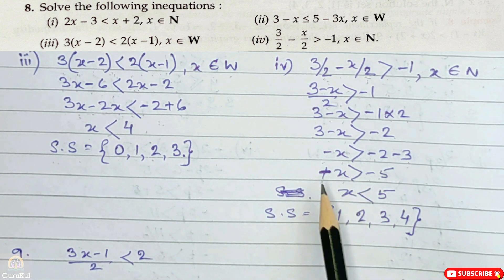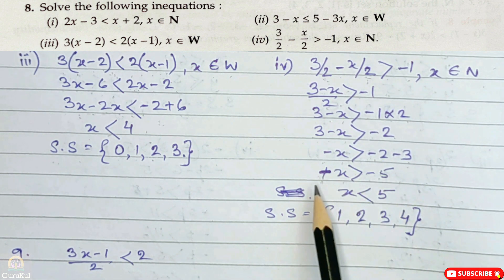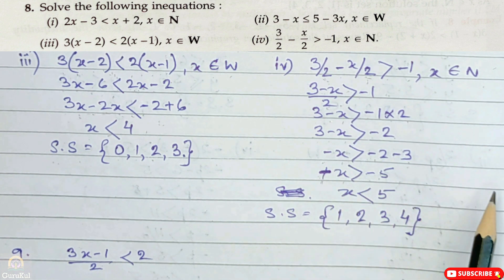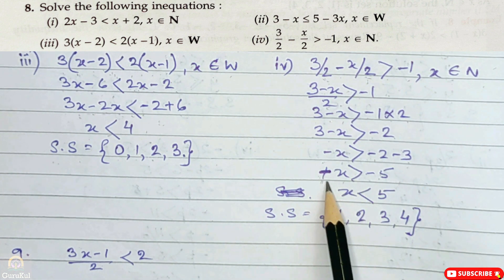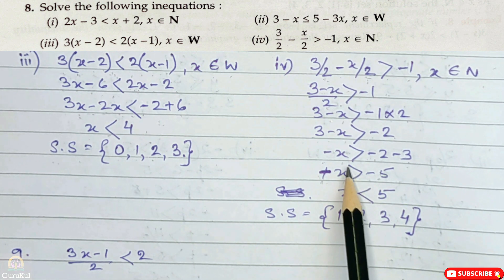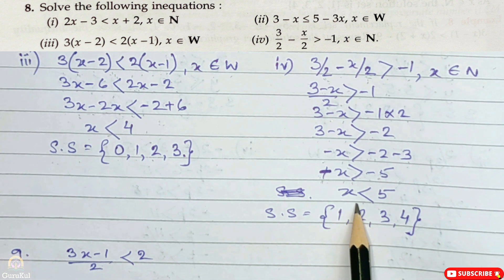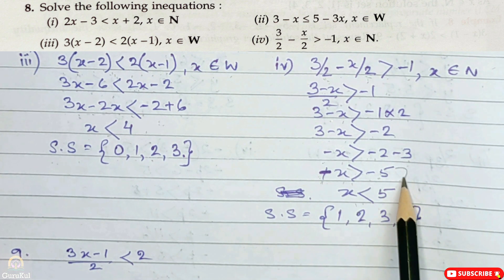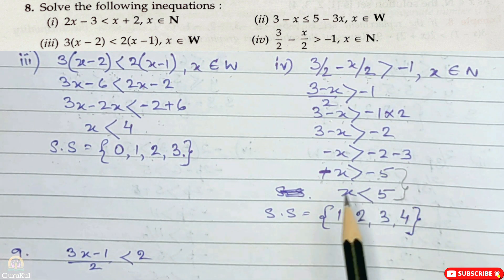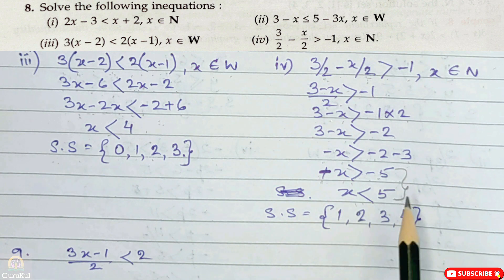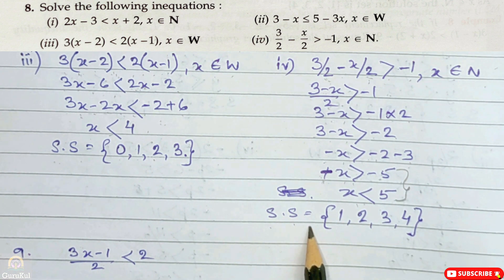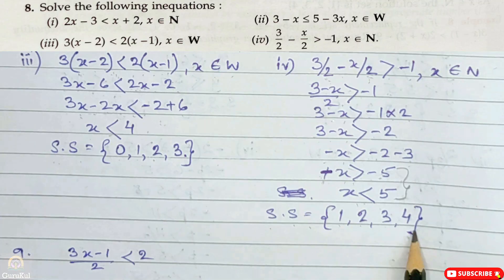Note a key difference here: when we omit the negative sign from both sides of an inequation, the greater than sign reverses and becomes a less than sign. This is the difference between a normal equation and an inequation. So x less than 5. Our solution set is 1, 2, 3 and 4.